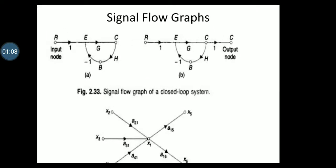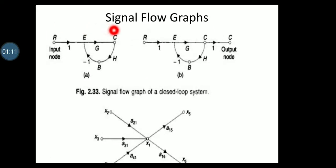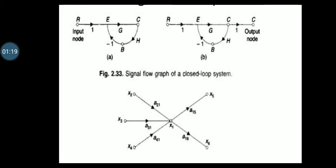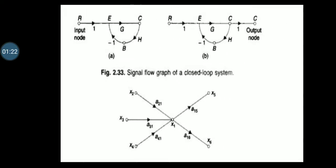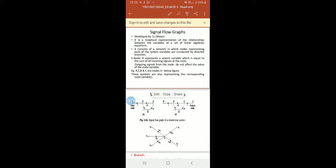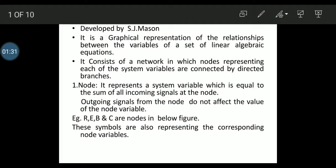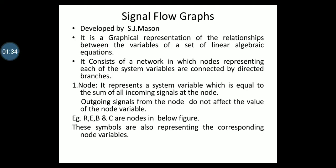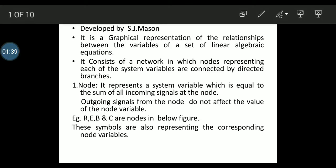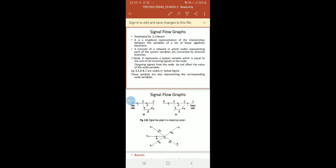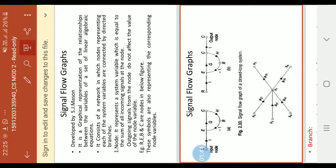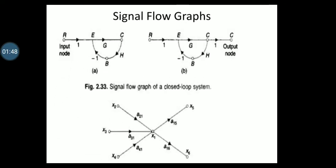This is a figure. You can see R, E, B and C are nodes in the figure. These are the nodes in the figure. These symbols are also representing the corresponding node variables.